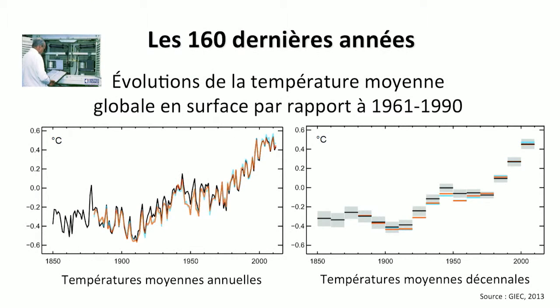On the right-hand side graph, we see the average temperature per decade. One may observe that each decade is warmer than the previous ones, starting in 1850.